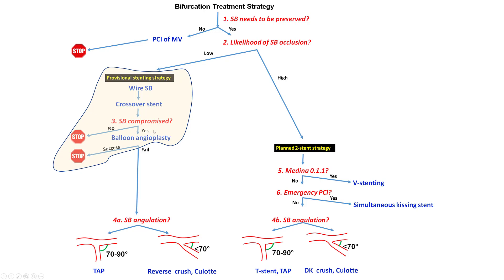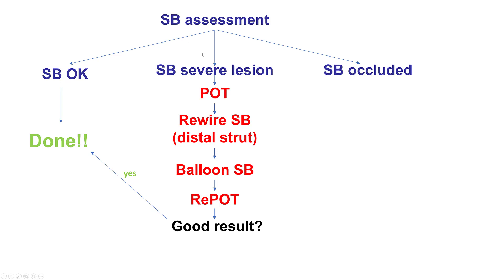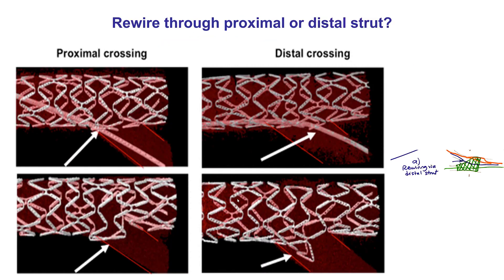There is a possibility of the side branch being compromised. If that happens, there are different steps. The first one is typically to do balloon angioplasty of that branch. Proximal optimization is done first to ensure that the stent proximally is well opposed and that the new wire will not go under the stent struts. Then the side branch is rewired through a distal strut. The question of whether to rewire through the proximal or distal strut is a common source of confusion, and the answer is: for provisional stenting, you always want to rewire through a distal strut.